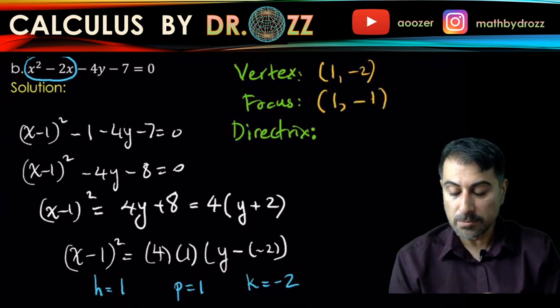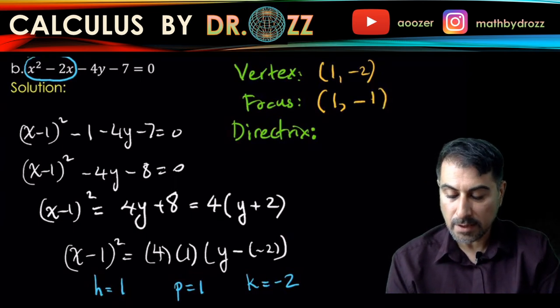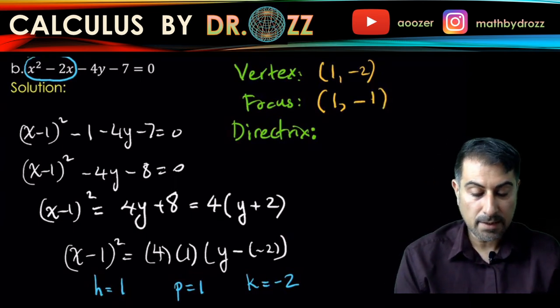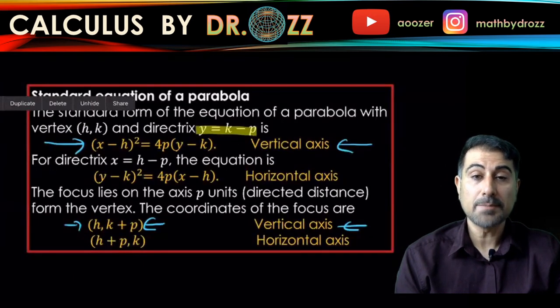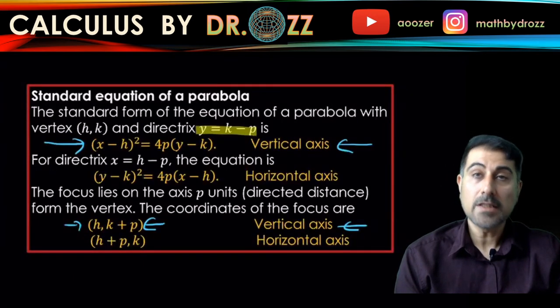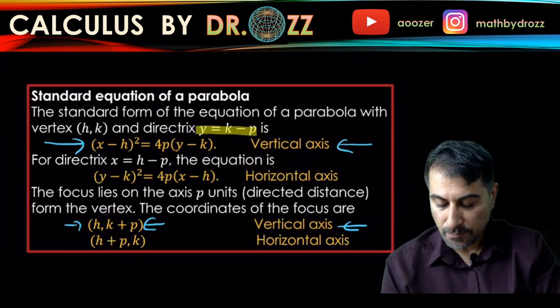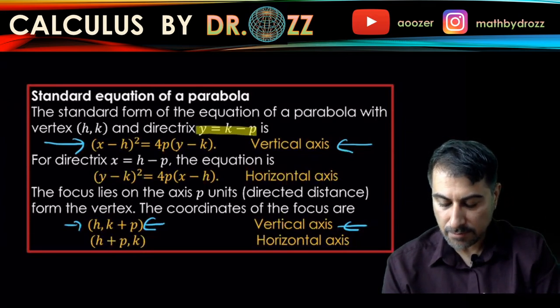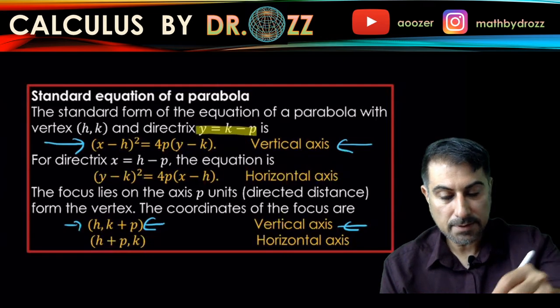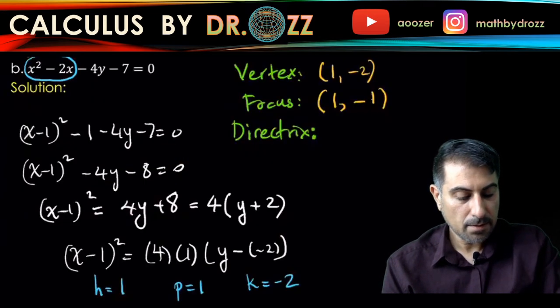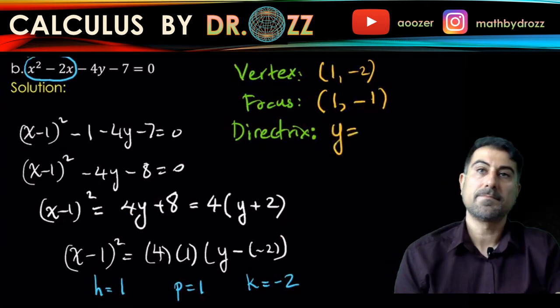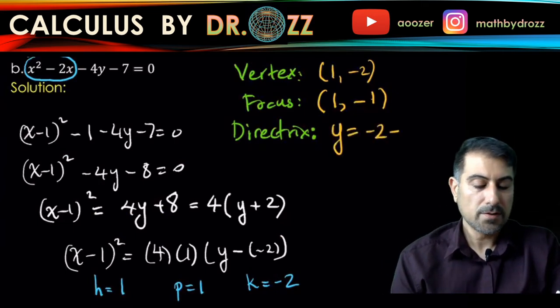The directrix is coming with the formula y equals k minus p. I'm going to go back and write down k minus p: y equals k minus p. So at the end of the day, this is y equals negative 3, a horizontal line.